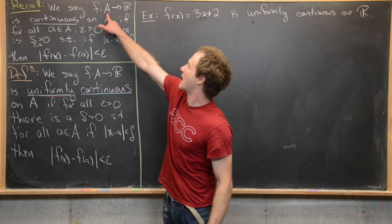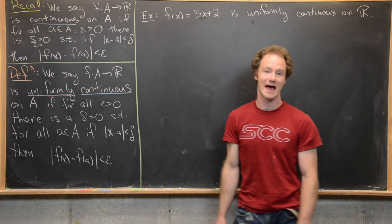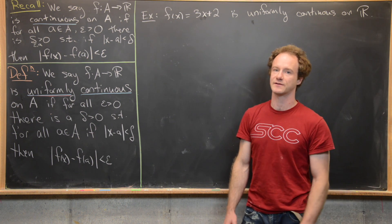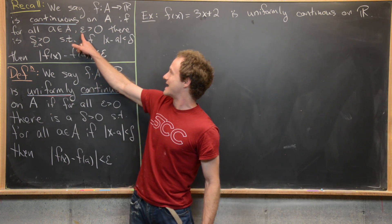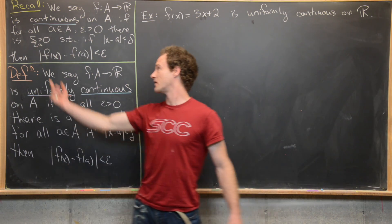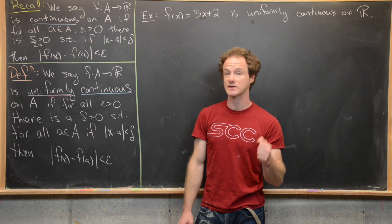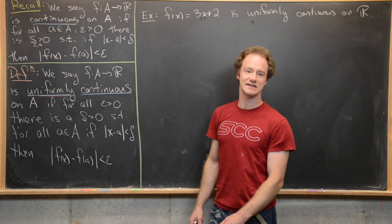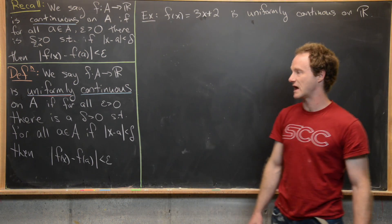We say that f from A to R, where A is a subset of real numbers, is continuous on capital A — meaning continuous at every point of capital A — if for all a in A and epsilon greater than zero, there exists a delta (which depends on epsilon as usual, but also depends on a) greater than zero, such that if |x - a| < delta, then |f(x) - f(a)| < epsilon.